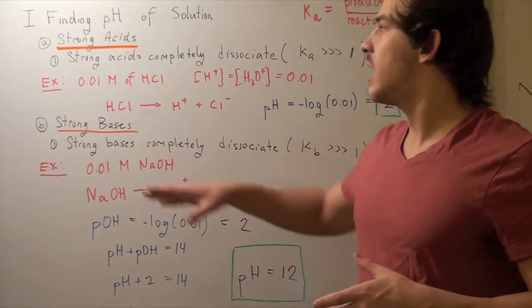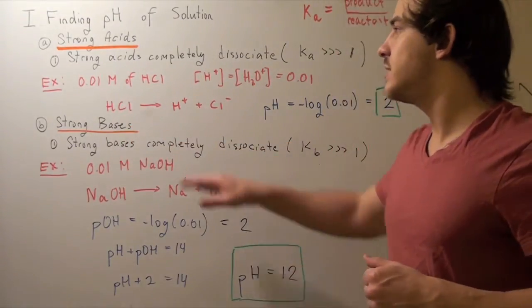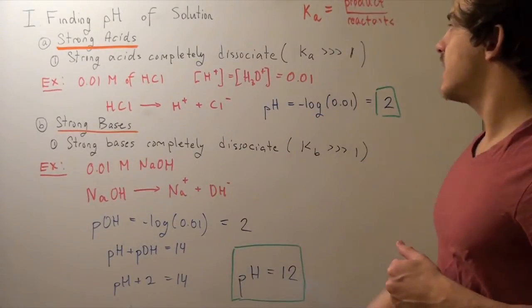For example, let's look at hydrochloric acid. Suppose hydrochloric acid dissociates into H+ and Cl-. Well hydrochloric acid has a very, very high Ka. In fact, it's so high we don't know what it is.